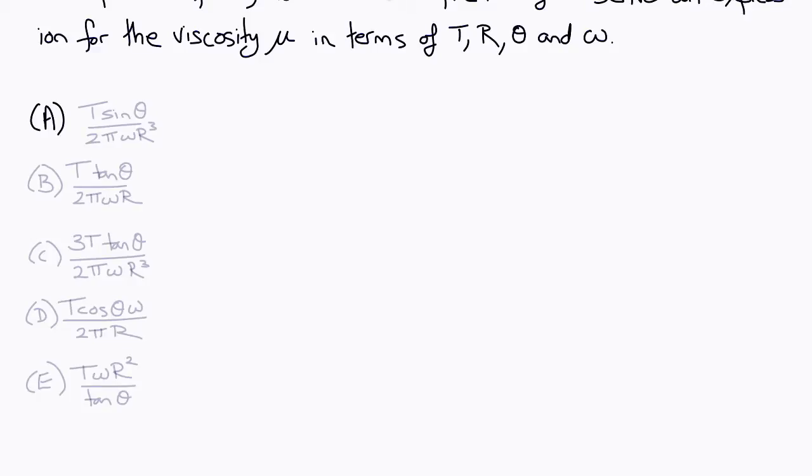So, what was your solution? Was it (a) T sin θ over 2π ω R³, (b) T tan θ over 2π ω R, (c) 3T tan θ over 2π ω R³, (d) T cos θ ω over 2π R, or (e) T ω R² over tan θ?